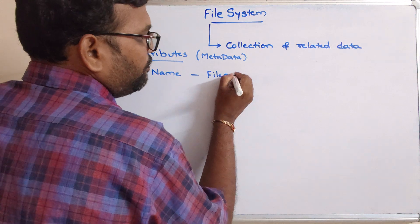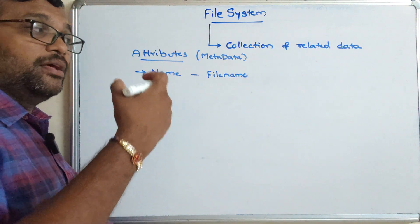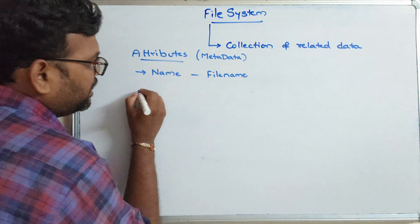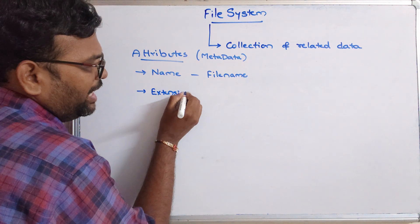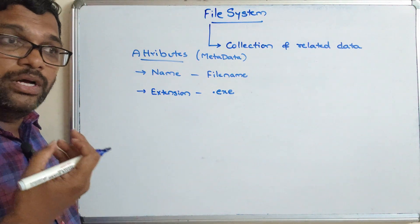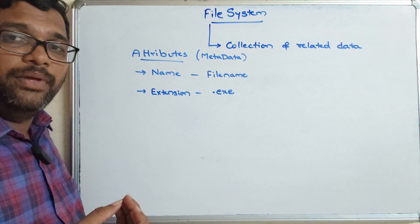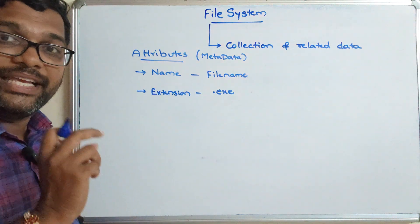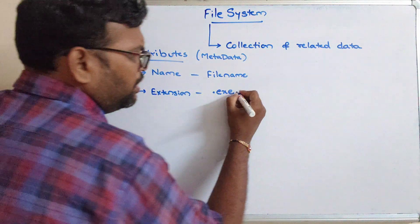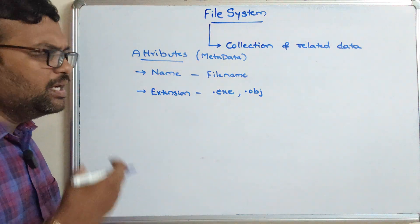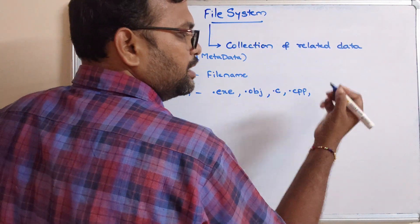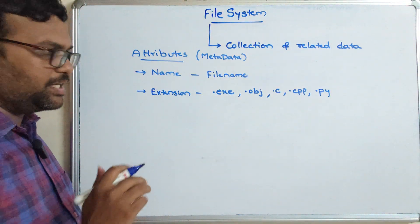The first attribute is the name. Every file will have its own name — a file name. Based upon what kind of data is stored, we can give a file name. The second one is the extension, which we just discussed. There will be a .exe file which is an executable file — when a C, C++, or Java program is successfully compiled, a .exe file is generated. Similarly, .obj is an object file in machine-understandable language. We also know .c for C files, .cpp for C++ files, and .py for Python files.